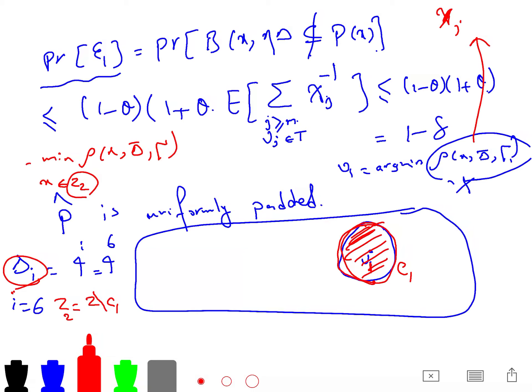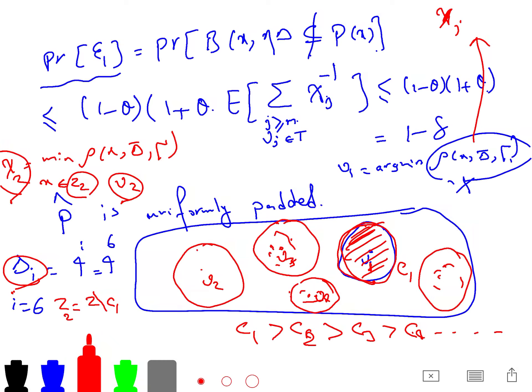Because we have to minimize rho of X and delta bar and gamma, but this time X is in Z2, and Z2 is the blue area excluding the red area. So the arg min of that is again V2, but the value is chi 2. So V2 is here, and then this process goes until we cover all of the points. But you see, we have some kind of ranking, so first V1, V2, V3, V4. So we have some kind of rank C2, C3, C4, until we have covered all of the points.